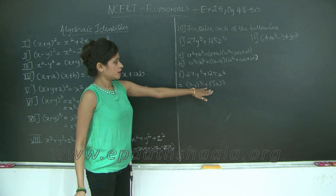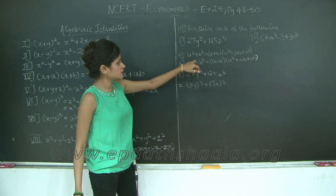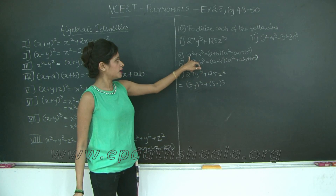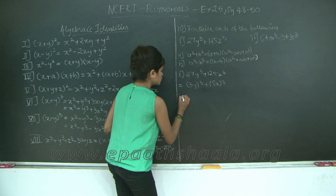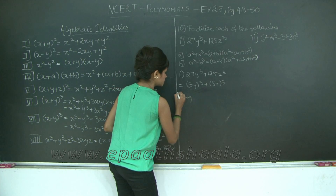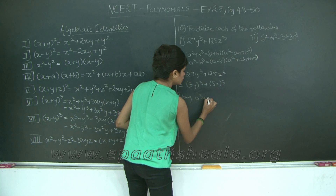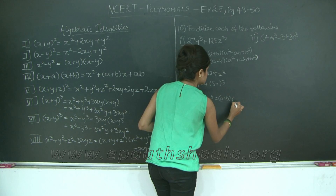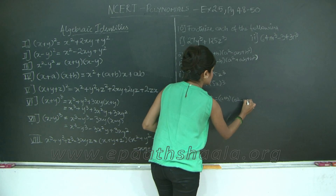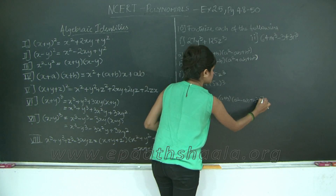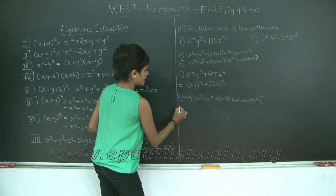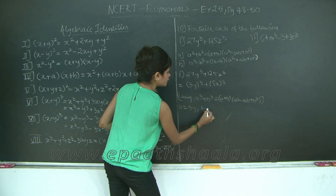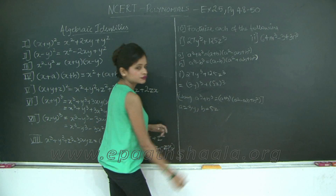When you compare this expression with these formulas, you will notice that this one is similar to the first formula which is a cube plus b cube. So, using a cube plus b cube is equal to a plus b into a square minus ab plus b square, we get a as 3y and b as 5z.